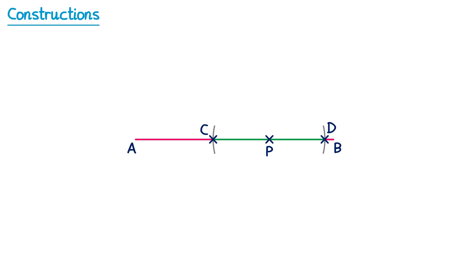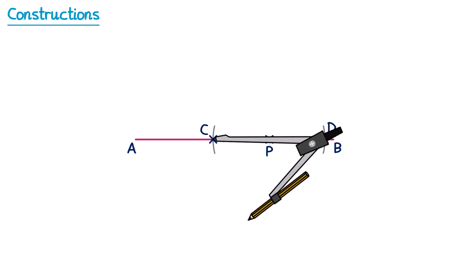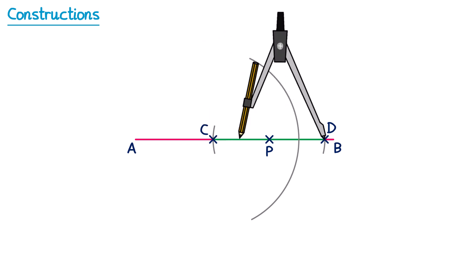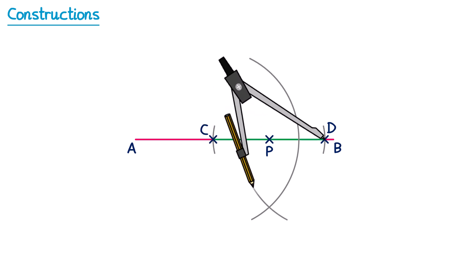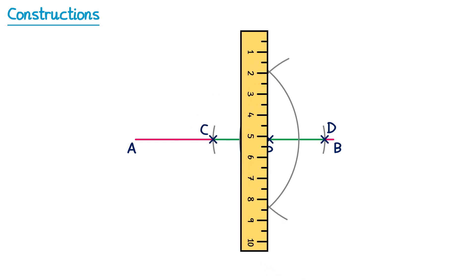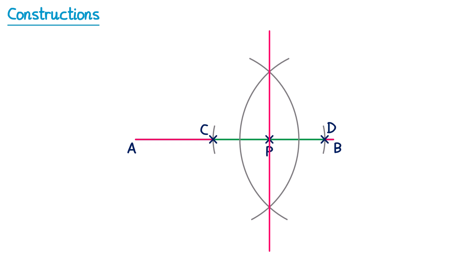So we take our pair of compasses and place them on the point C. We make sure they're opened up to over half of the length of the line, and draw our first arc. Then we switch the point to point D, but don't change the size of the pair of compasses, and draw a second arc. We now know that if we connect these two intersection points together, it will go through the middle of the line — through point P. So we've now managed to draw a line that's at 90 degrees with line AB, but specifically goes through this point P.